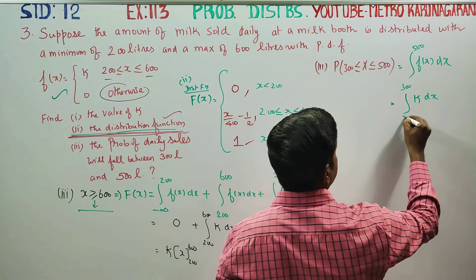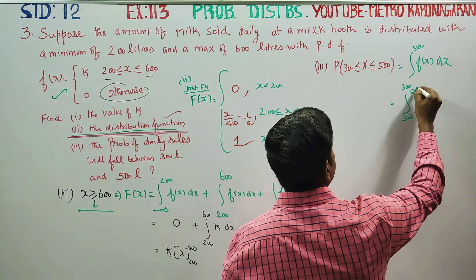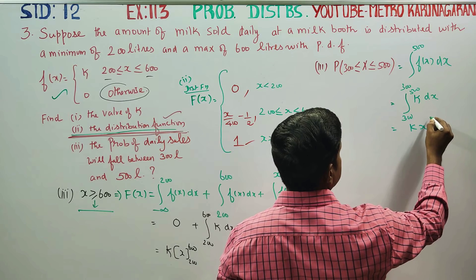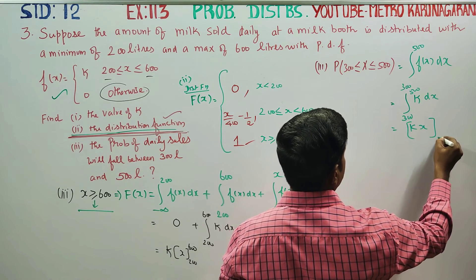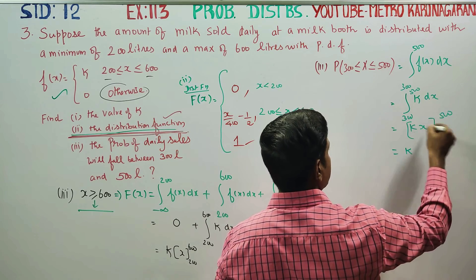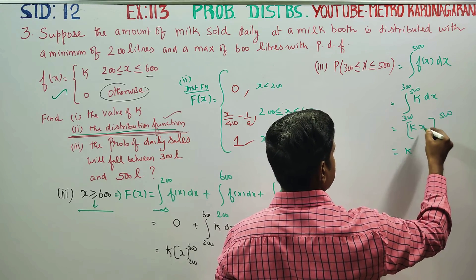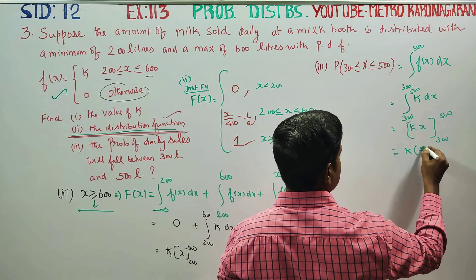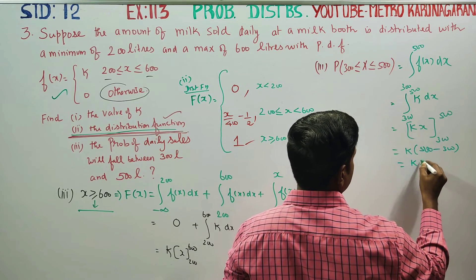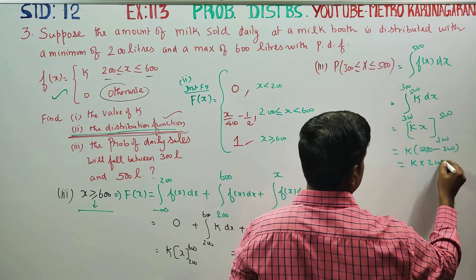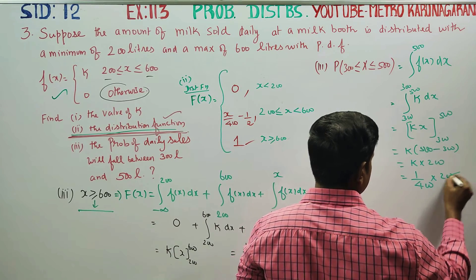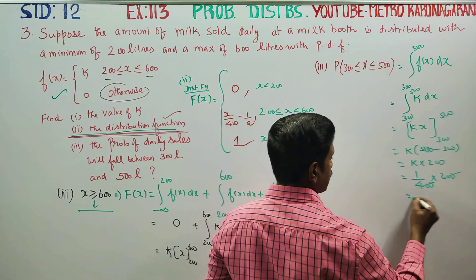Evaluating the integral from 300 to 500 of k dx gives k times (500 minus 300), which equals k times 200. Substituting k equals 1 by 400: the answer is 1 by 400 times 200, which equals 1 by 2.